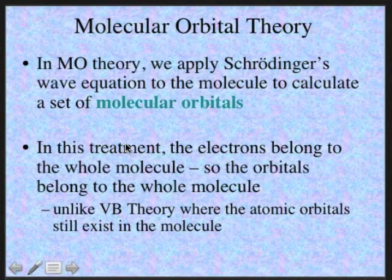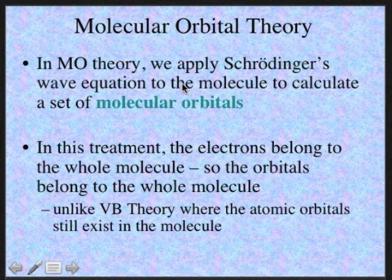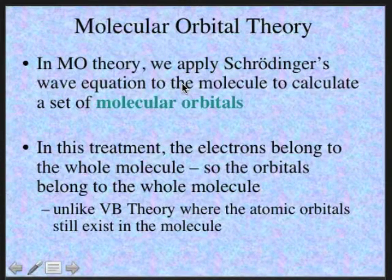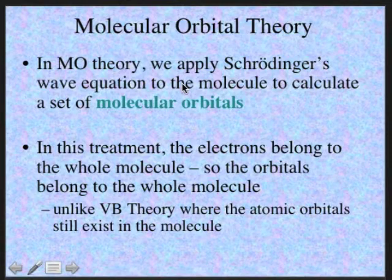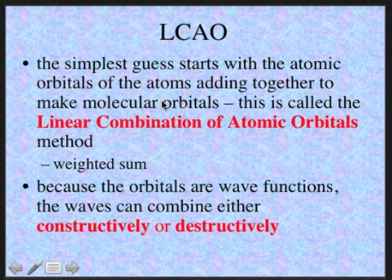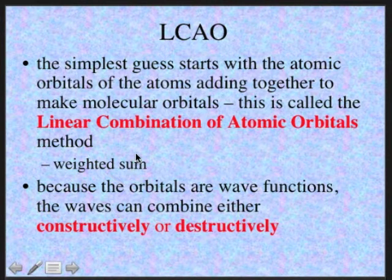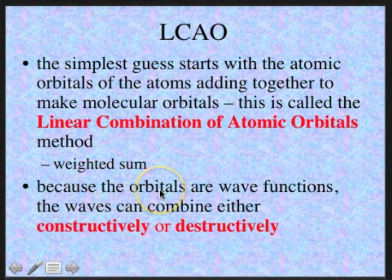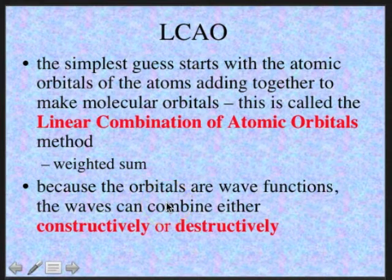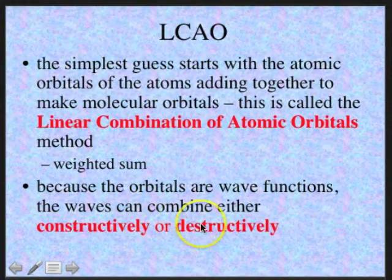Now we're going to talk about molecular orbital theory. In this theory, we apply Schrödinger's wave equation to the entire molecule to calculate a set of molecular orbitals. This is different from valence bond theory, where we just looked at individual atomic orbitals — here we look at the entire molecule. The way this is done is through a method called the linear combination of atomic orbitals: the weighted sum of all the atomic orbitals making up the molecule.